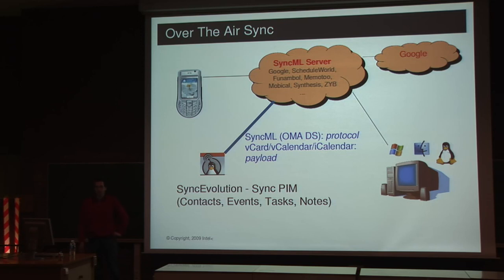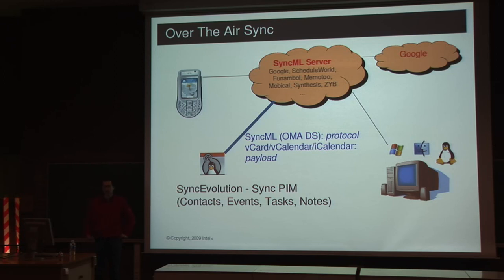This scenario is the traditional one with SyncML being deployed over HTTP. SyncEvolution as a project fits into the whole picture by being yet another SyncML client — that was the original goal when I started with the project: doing something simple that takes data out of my local computer, like Evolution, and synchronizes contacts, events, tasks, and notes. For that, we need a suitable server to talk to, so it always takes two to dance in Sync — one is the client, the other is the server.